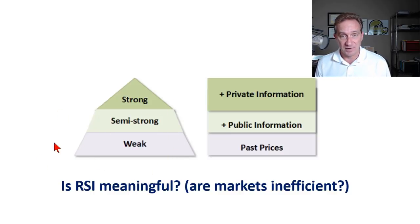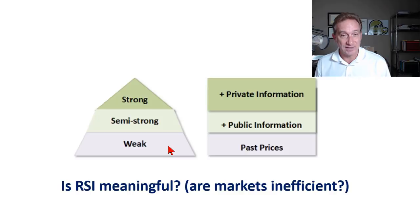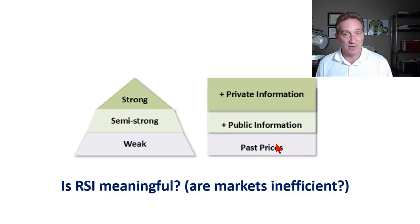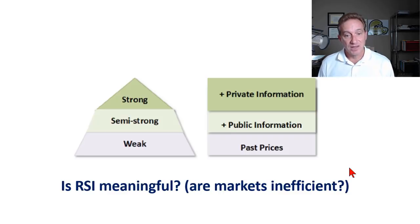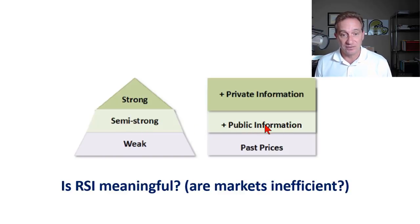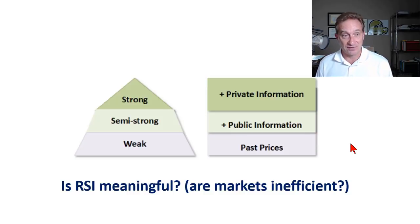The efficient market hypothesis has three forms, starting with the weak. The weak form says that if markets are weakly efficient, current stock prices already incorporate any information in their past prices. If you believe markets are weakly efficient, it's logical to conclude that technical analysis adds no value and cannot produce any alpha. The semi-strong form says the current stock price already incorporates all public information, and if you believe that, fundamental analysis — analyzing financial statements — really doesn't add value or generate alpha.